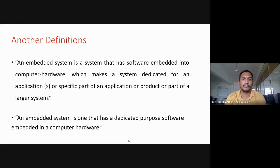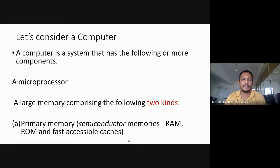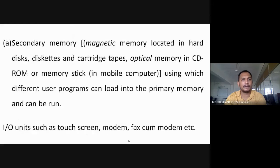Let us consider a computer as a system. A computer has the following components: a microprocessor; a large memory comprising primary memory and secondary memory. Primary memory includes semiconductor memories like RAM, ROM, and fast accessible caches. Secondary memory includes magnetic memories located in hard disk, card trays, optical memories in CDs, ROMs, or memory sticks.